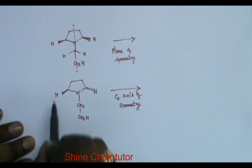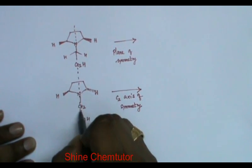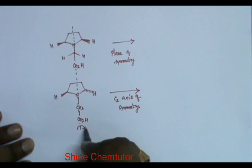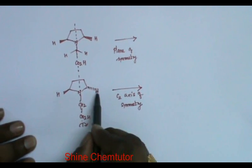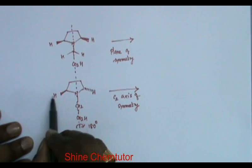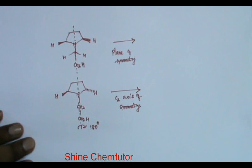When you go for C2, you have to rotate the molecule through this axis by 180 degrees. This hydrogen will go this side. This hydrogen will come this side. Based on this, how can we solve the topicity problem? It is very simple.